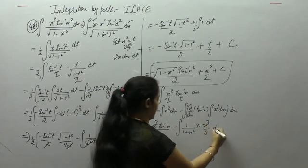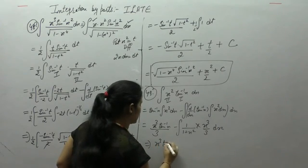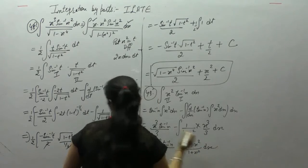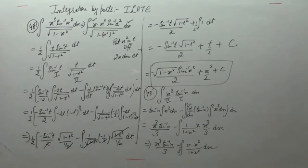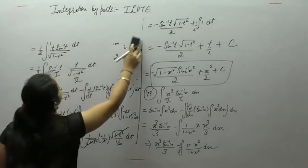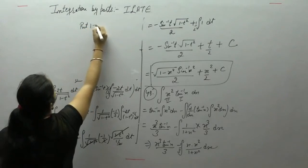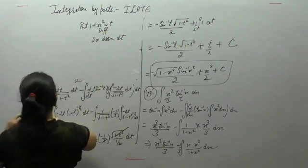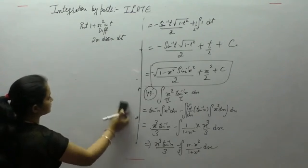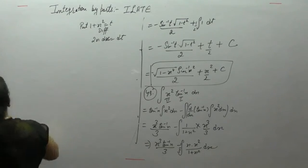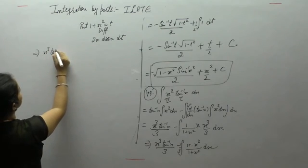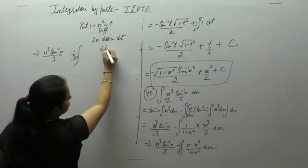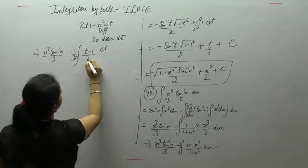The integral of x² is x³ by 3. We can write x³ as x into x². Now put 1 plus x² as t. Differentiating: derivative of 1 is 0, so 2x dx equals dt. Therefore x dx is dt upon 2, and x² equals t minus 1. So x³ tan inverse x upon 3 is obtained.